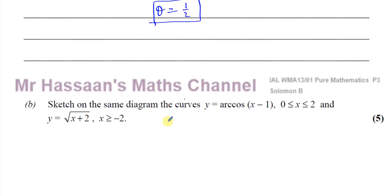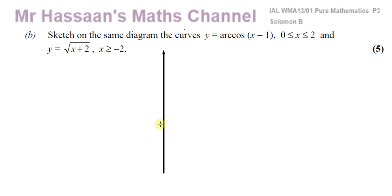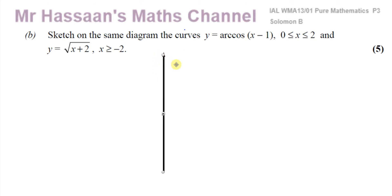Now part B says: sketch on the same diagram the curves y equals arc cosine of (x minus 1) for values of x between 0 and 2, and y equals the square root of (x plus 2) for x greater than or equal to minus 2. We have to sketch both curves on the same diagram. Both of these curves will not go below the x-axis. For the square root of (x plus 2), we're only considering the positive square root, so this will never go below the x-axis.